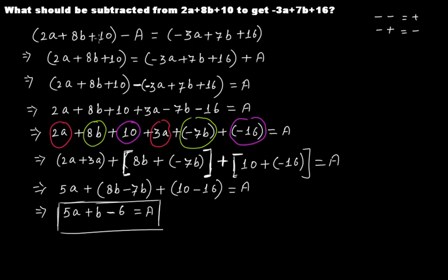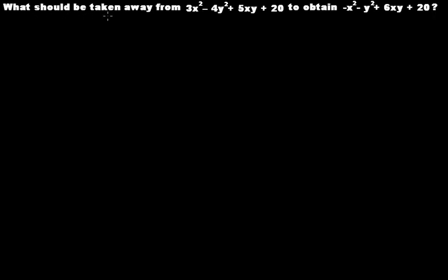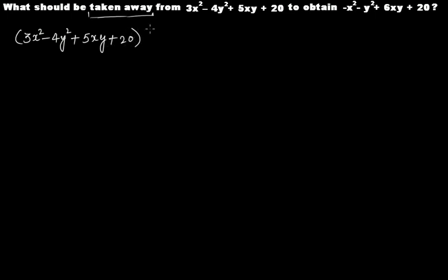Next problem: what should be taken away from 3x squared minus 4y squared plus 5xy plus 20 to obtain minus x squared minus y squared plus 6xy plus 20? 'Taken away' means subtraction. Let's suppose the algebraic expression to subtract is A.